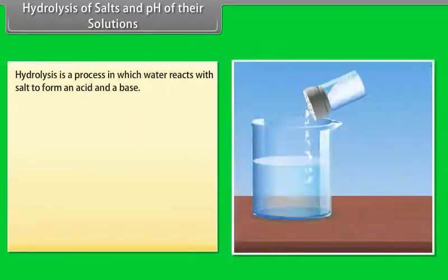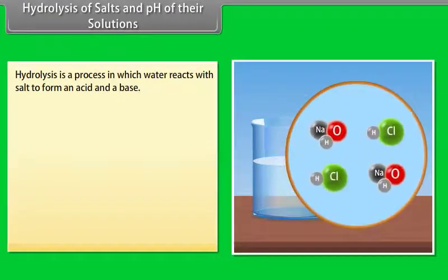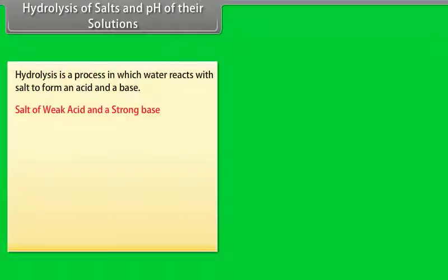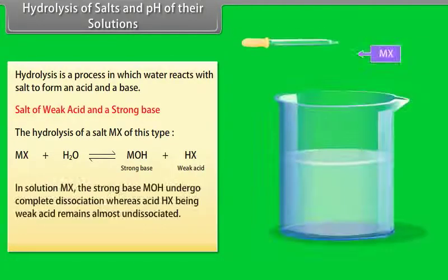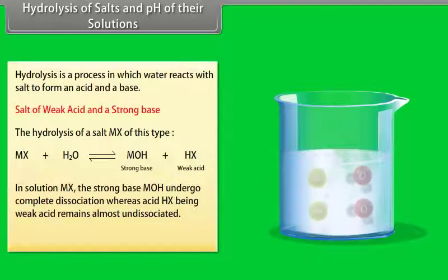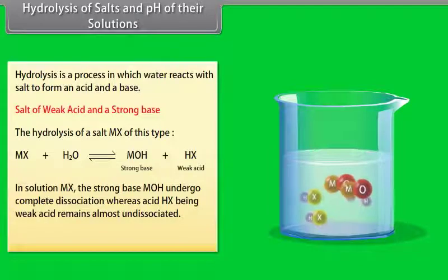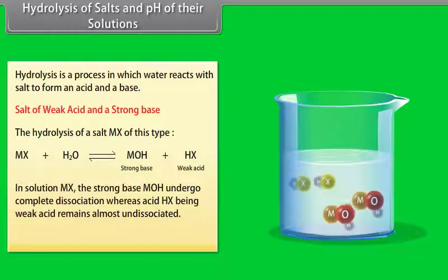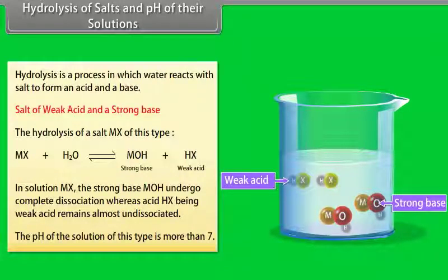Hydrolysis is a process in which water reacts with a salt to form an acid and a base. Salt of weak acid and strong base: In solution, the strong base MOH undergoes complete dissociation, whereas the weak acid HX remains almost undissociated. The pH of this type of solution is more than 7.